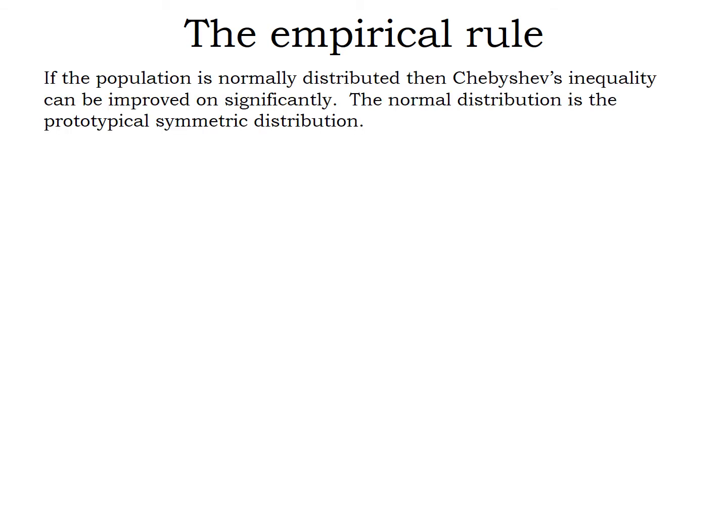Today I want to talk to you about the empirical rule. The empirical rule is similar to Chebyshev's inequality in that it's going to tell us how likely it is for a number to be a certain number of standard deviations away from the mean, but it improves on those limits dramatically with the caveat that the population that you're looking at must be normally distributed. The normal distribution is the prototypical symmetric distribution.